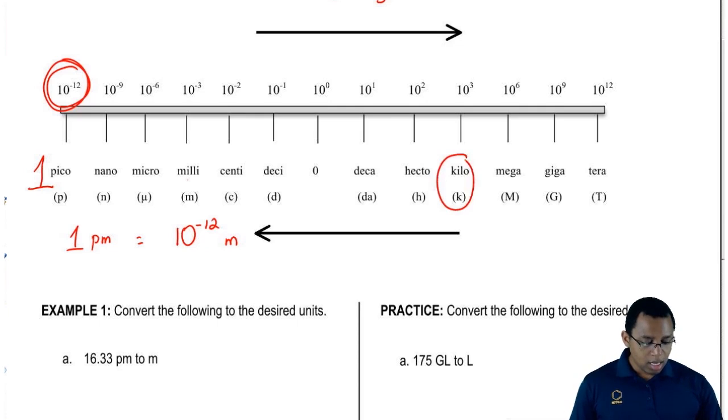Let's say I had kilograms and I wanted to go to grams. We'd say that for every one, because kilo is a metric prefix, for every one kilogram, it is 10 to the 3 grams.